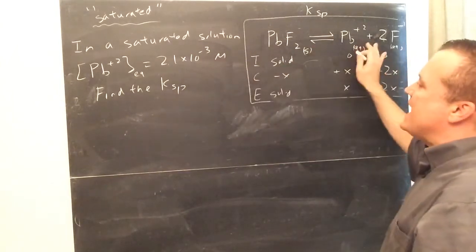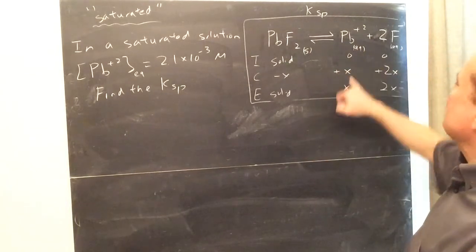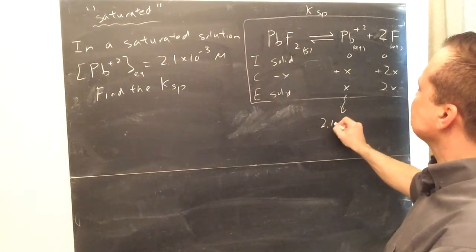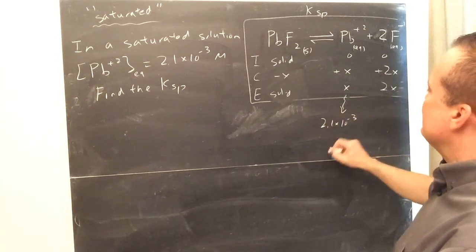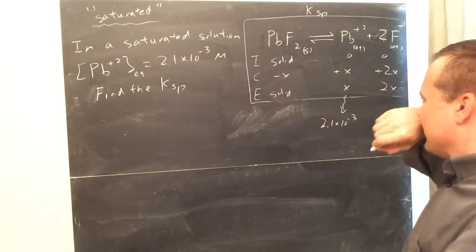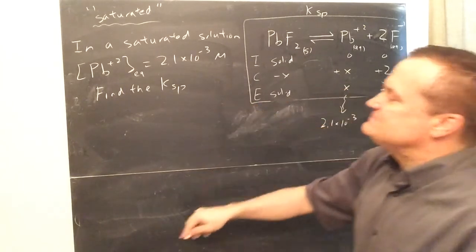Okay, so if we knew that, look at what we can do. We don't really care about the solid part. We can still write the ice box. So, if you write this out, you see, oh, they're telling me that x is 2.1. So, I know x is 2.1×10 to the negative 3. So, sometimes they give you this number at equilibrium.